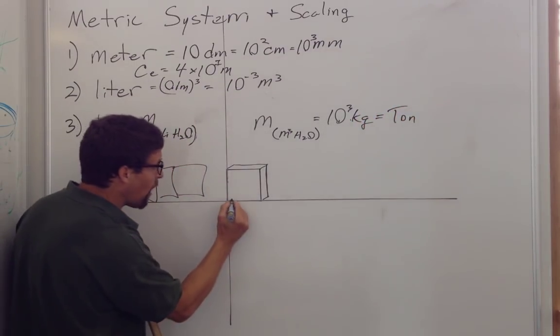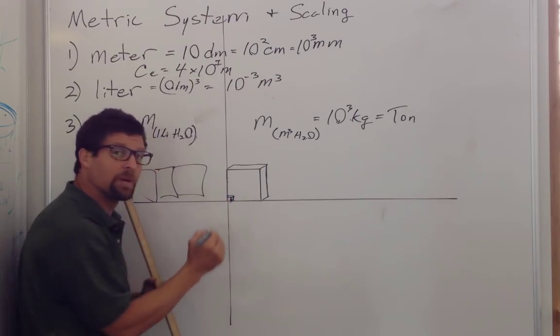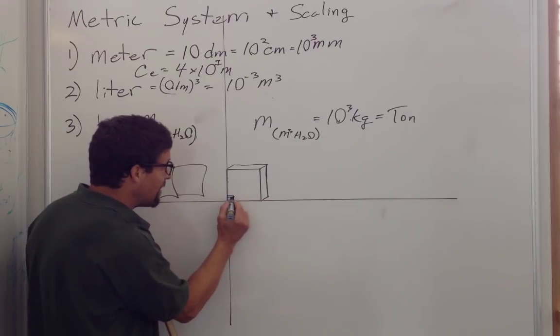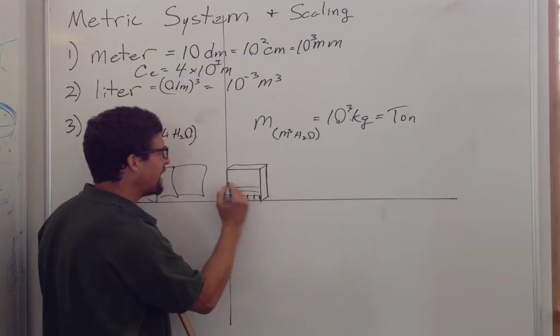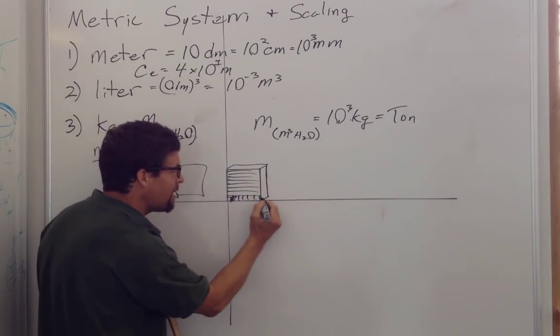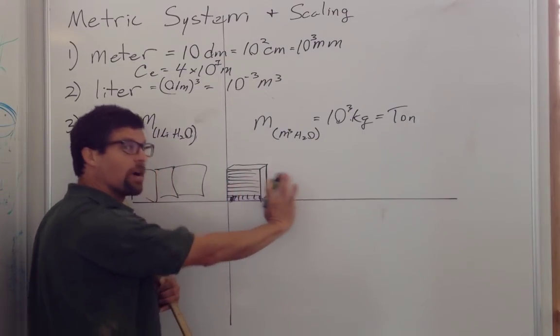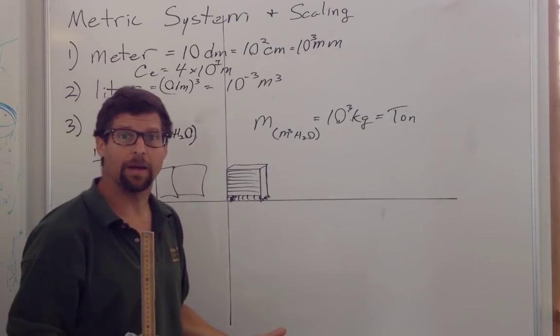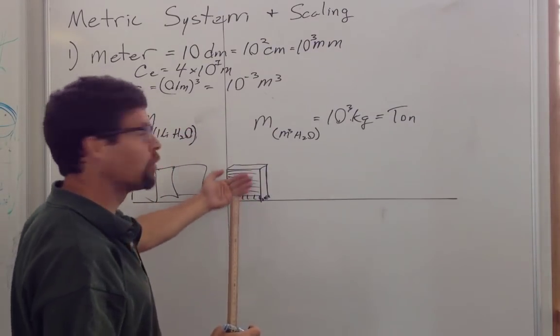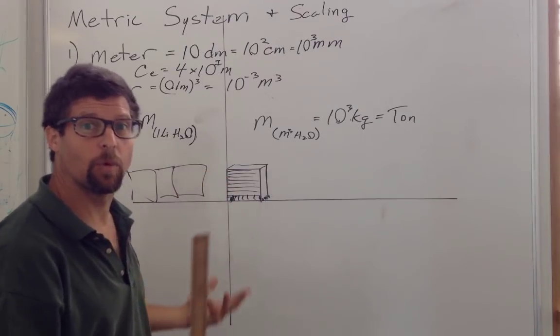Similarly, if we wanted to get the mass of one cubic centimeter, maybe this would be more visible, we would have 10 of these cubic centimeters along here, 100 in the whole face, and then another 10 of these faces all the way back. So it would be 1,000 cubic centimeters in 1 kilogram, and therefore its mass would be 1,000th of a kilogram, or just a gram.